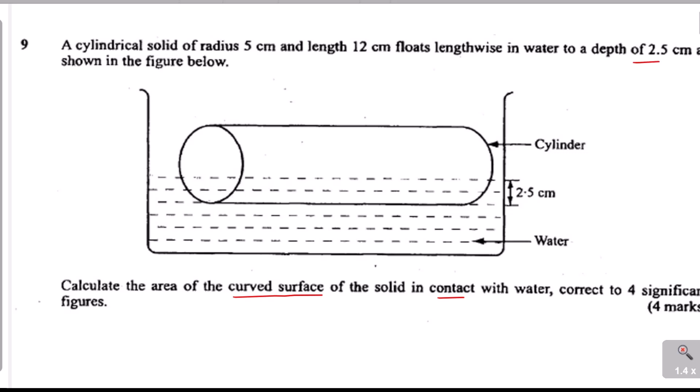First, let's identify which surface is in contact with the water. The whole surface in contact with the water includes a segment of the circle — the one I'm shading in yellow. There is another segment on the other side that we cannot see. But those circular segments are not needed because they are not part of the curved surface. The curved surface is the one lying at the bottom of the water and on the side.